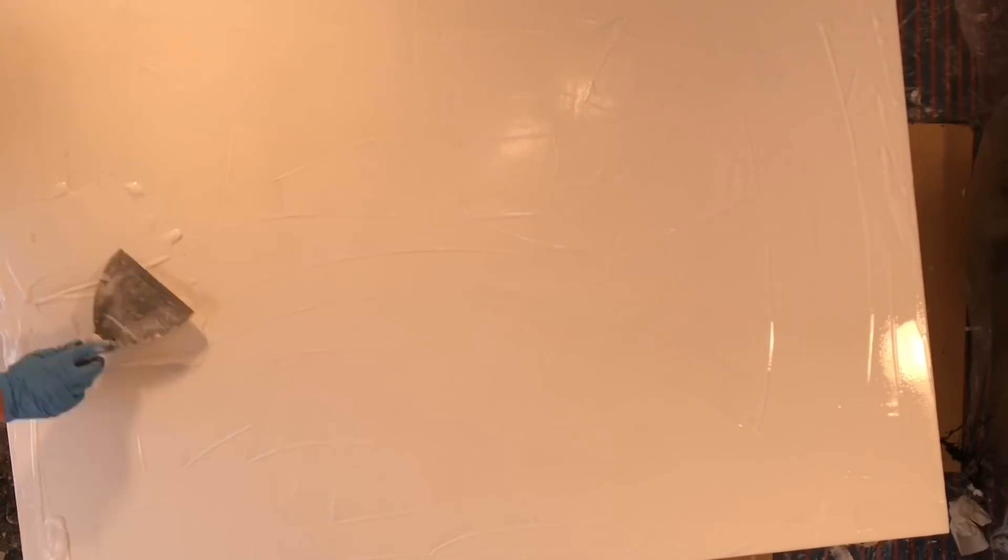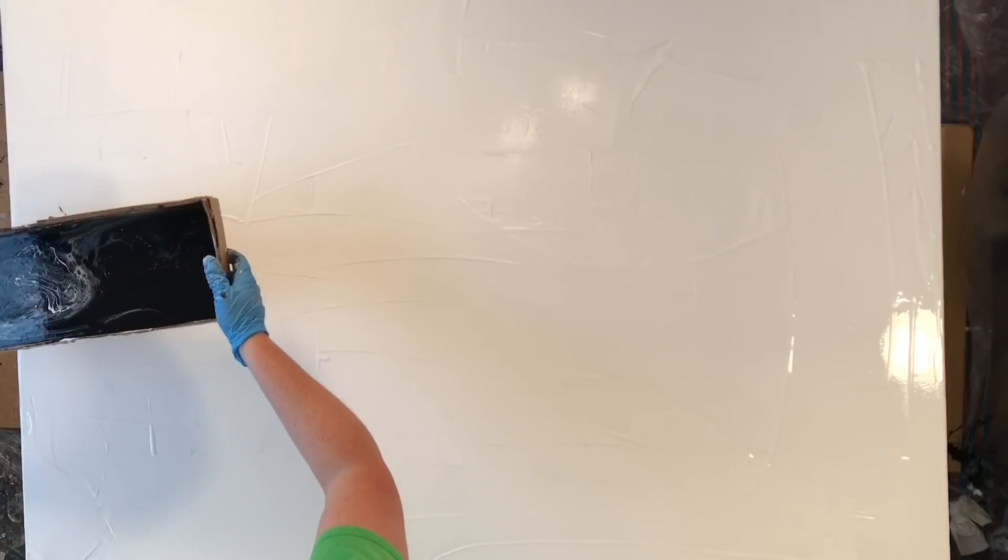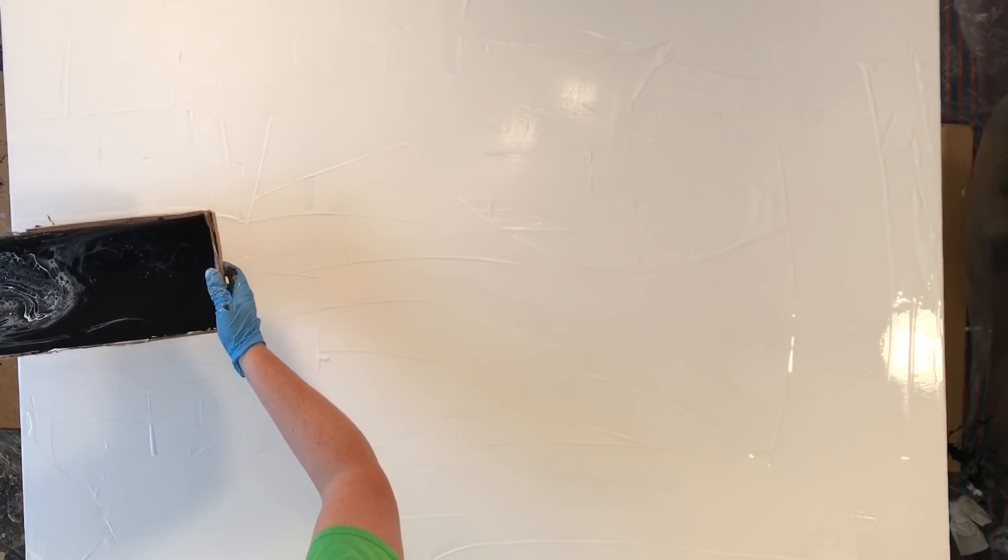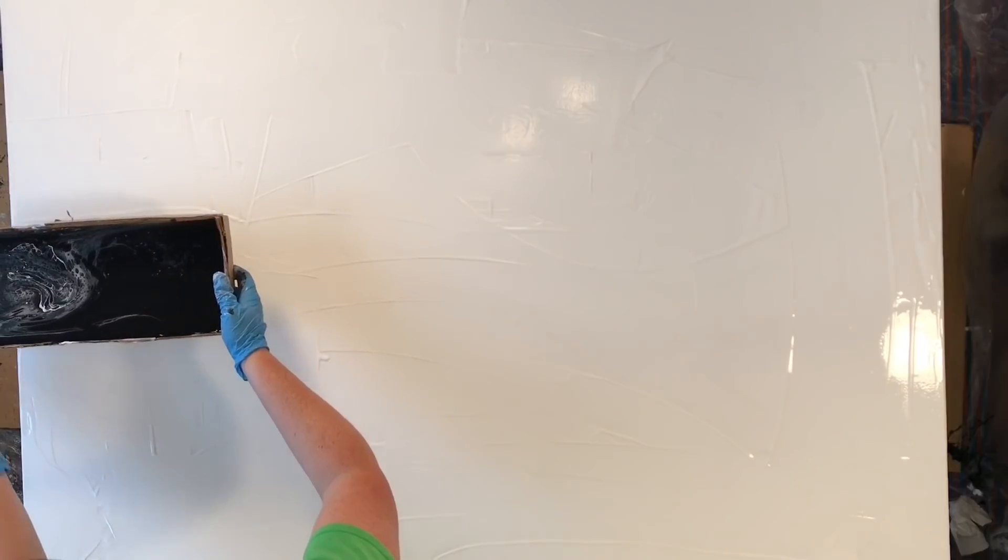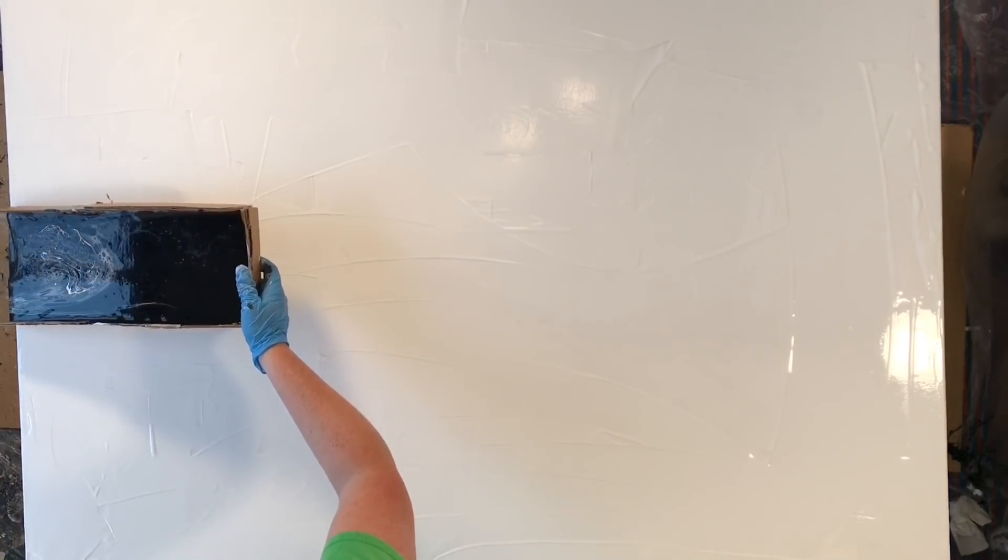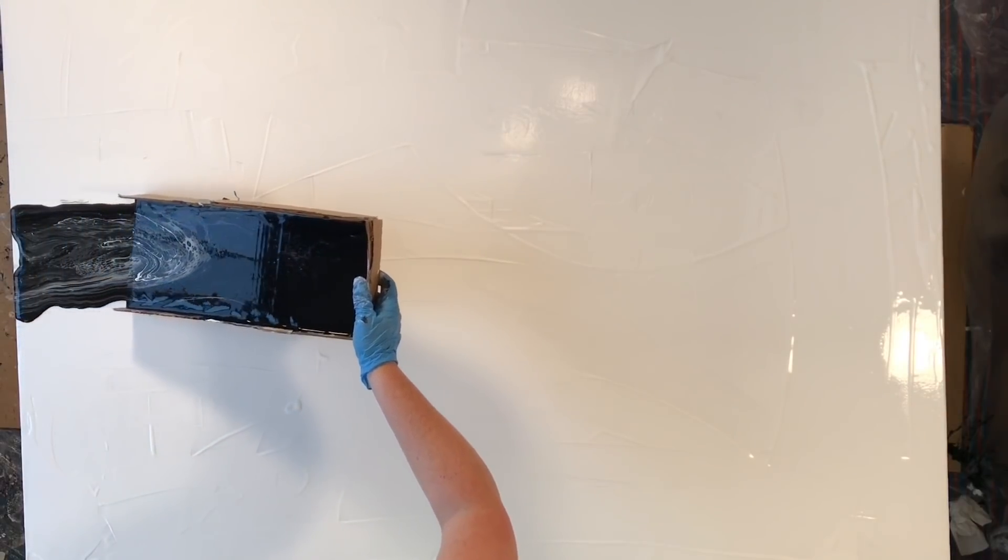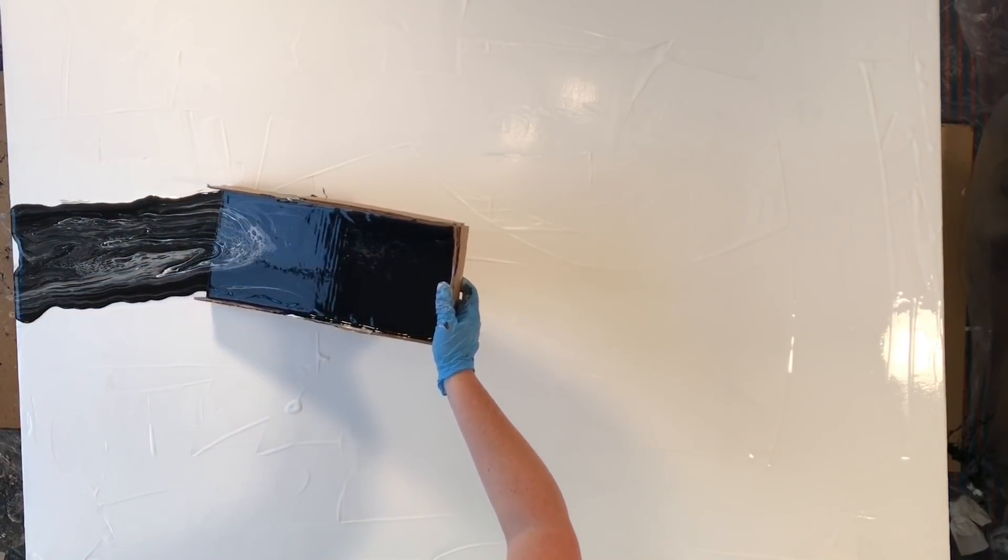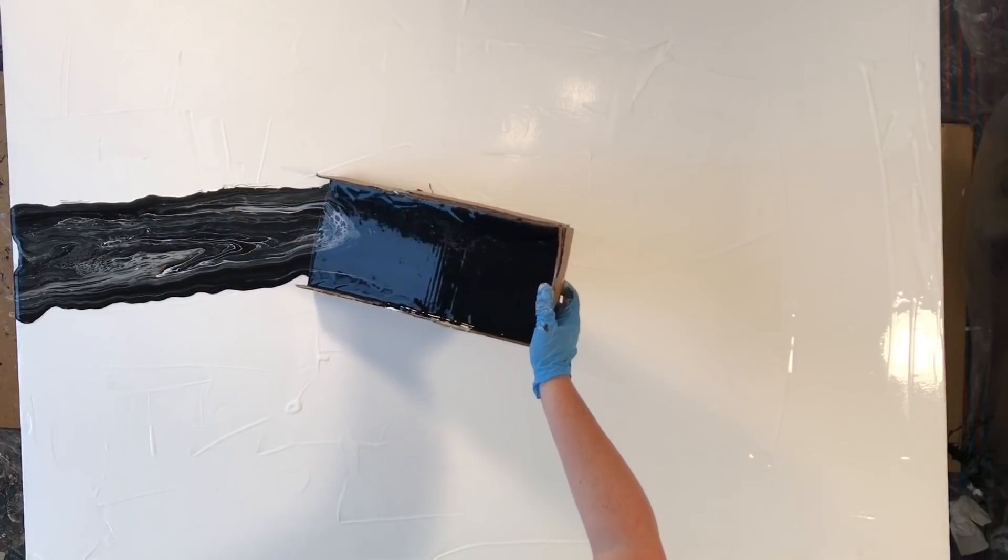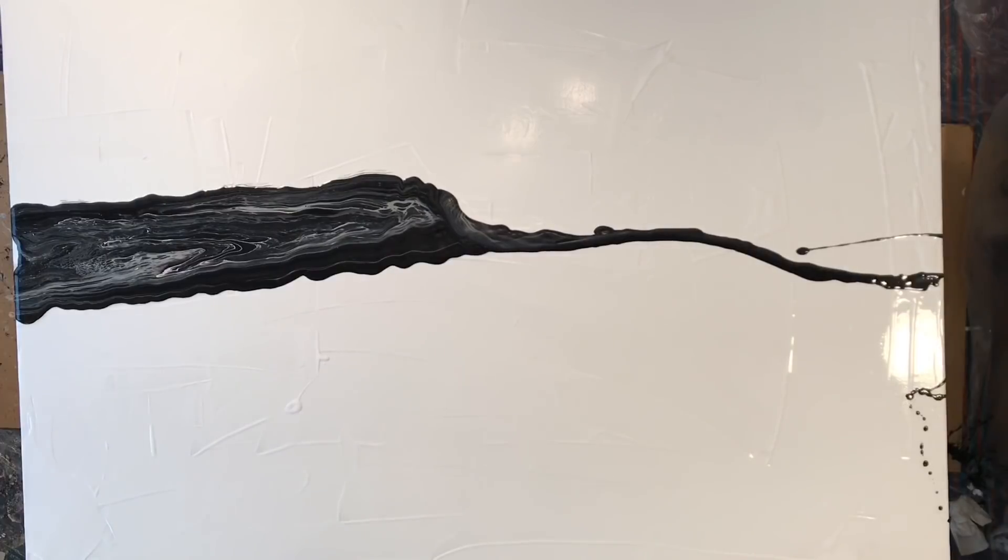And I came across this technique on Instagram where this lady made some cells on a piece of board and then kind of manipulated the board around and tipped the cells onto her canvas and in turn manipulated her cells. I thought that was a really great idea and I decided to give it a whirl myself.